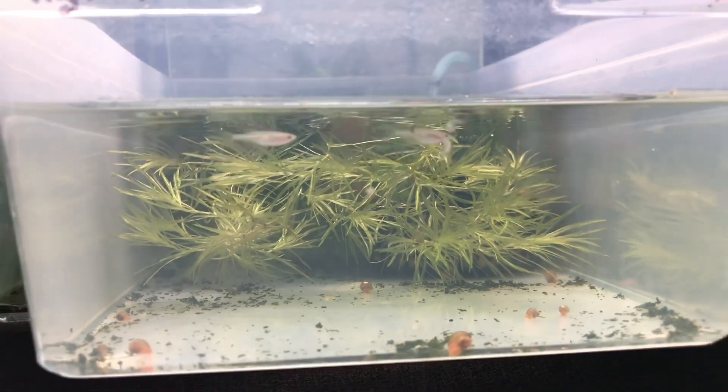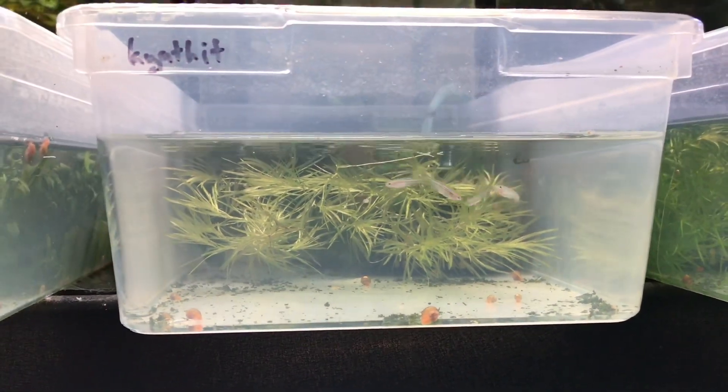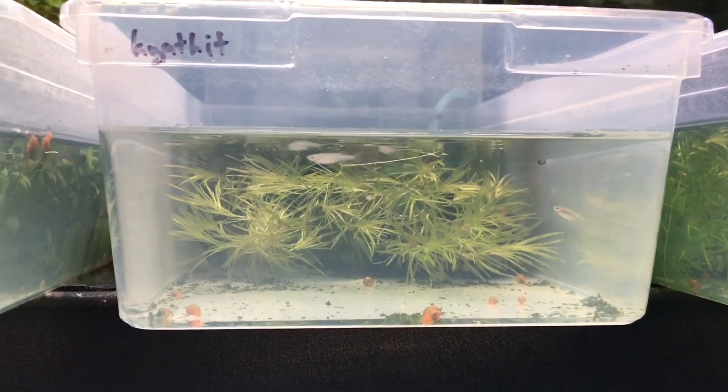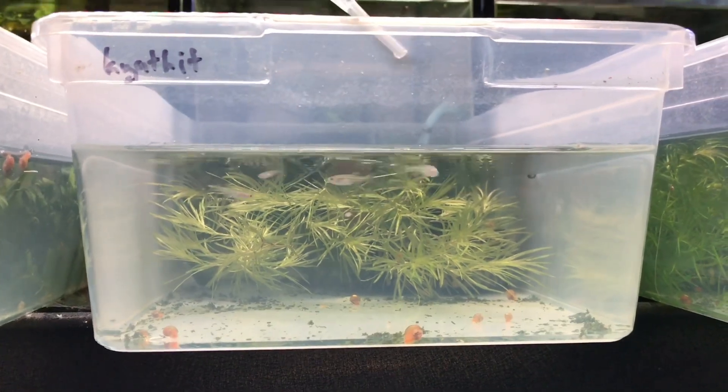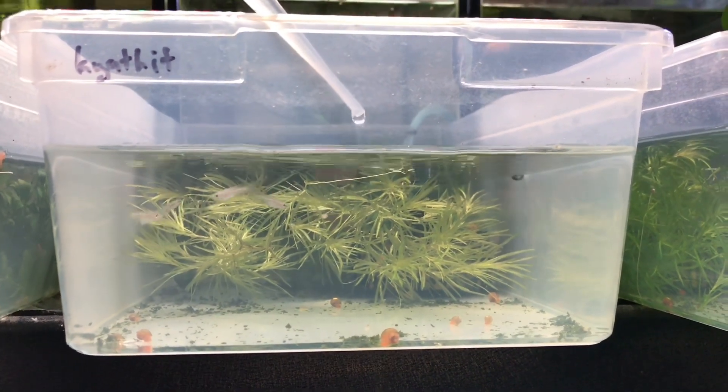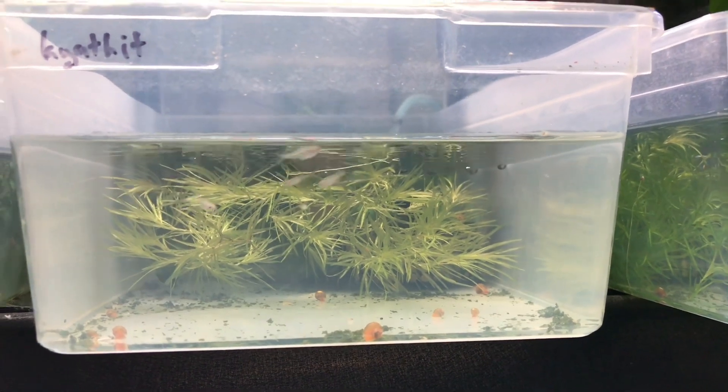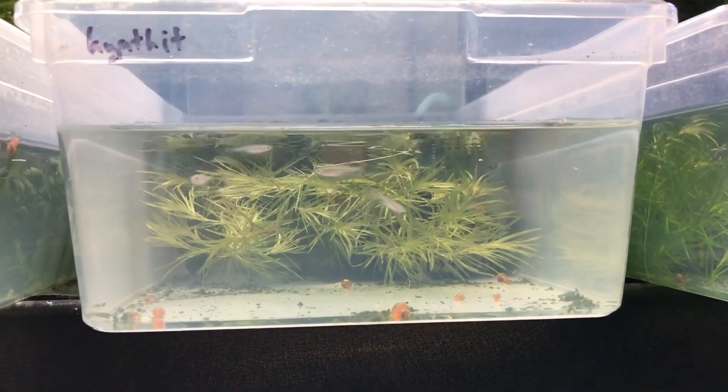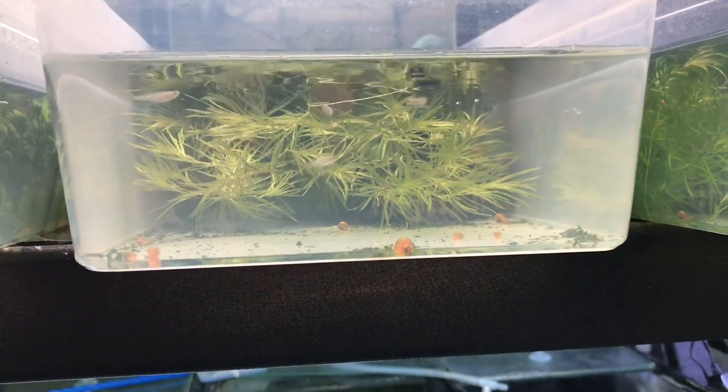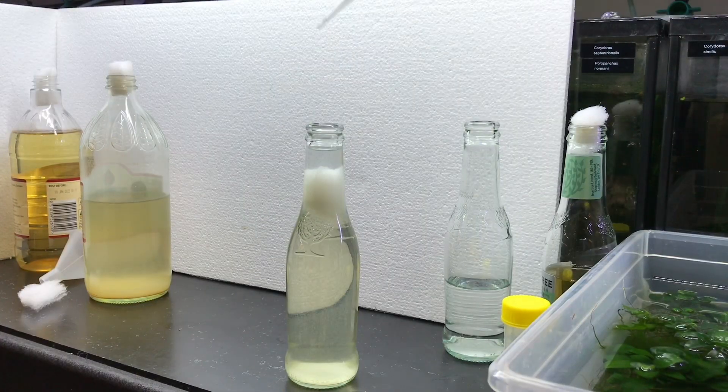You just want the eels to crawl from the culture below to the clear water at the top, and then we can feed the vinegar eels in the water to the fry tanks.